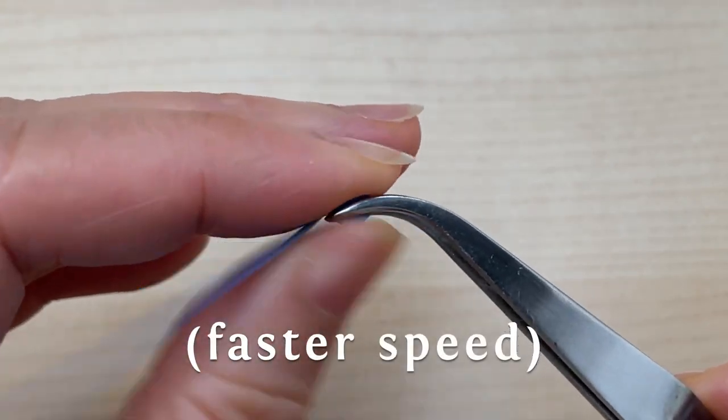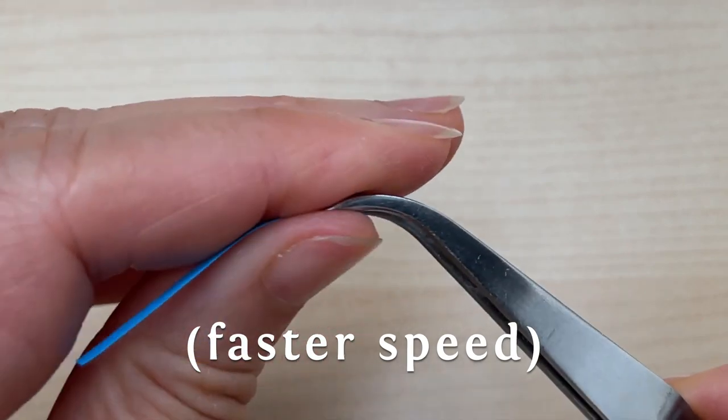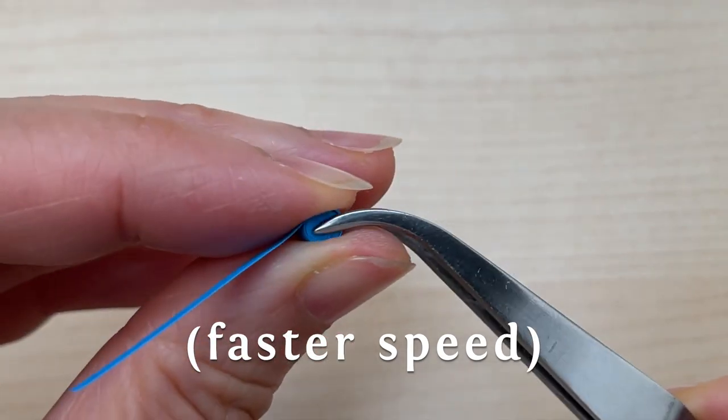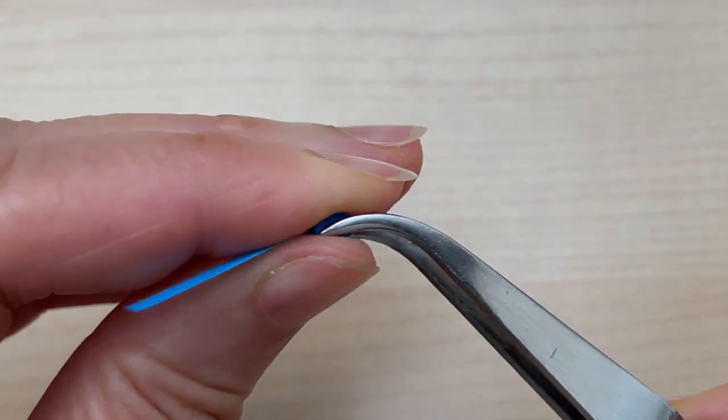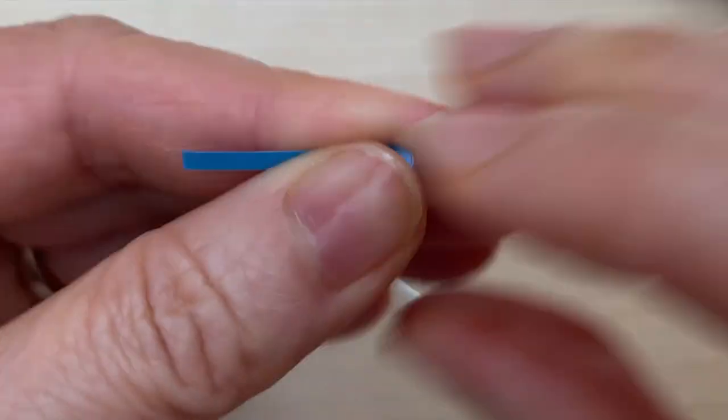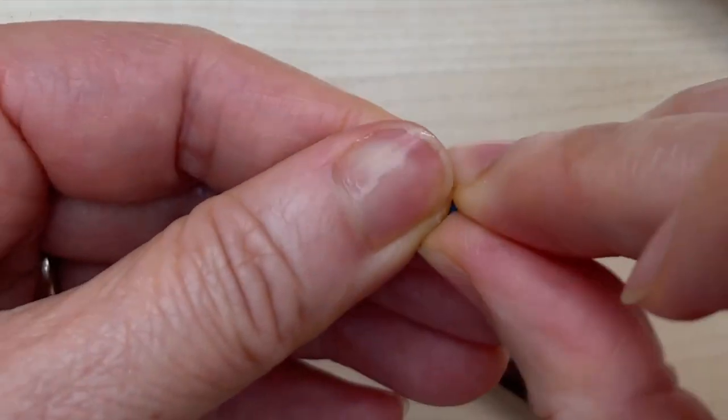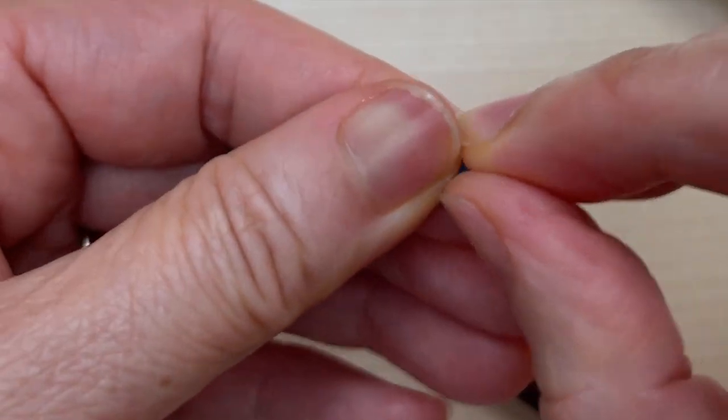Having the prongs there also helps keep all those edges even as I continue to ravel it up. Once it gets to a certain size, you can just continue to ravel that up by hand.